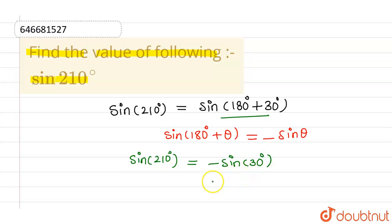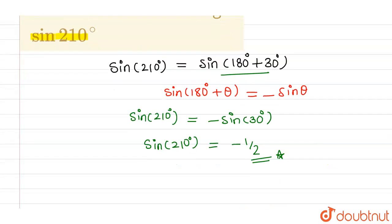So the value of minus sine 30 degrees will be minus 1 by 2, and this is the value of sine 210 degrees. So this is our final answer: the value of sine 210 degrees recorded as minus half. I hope you understood, thank you.